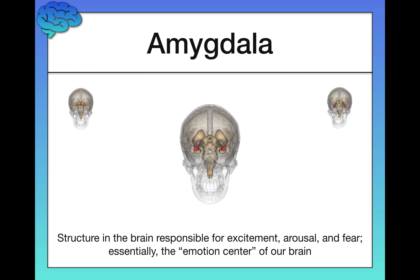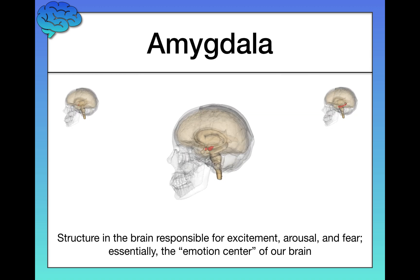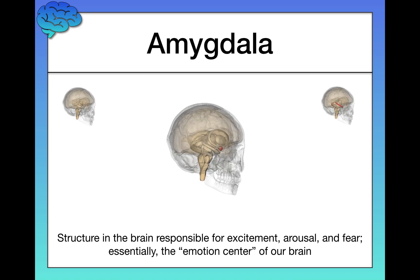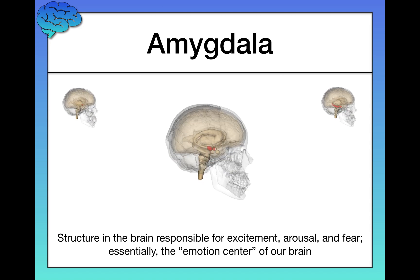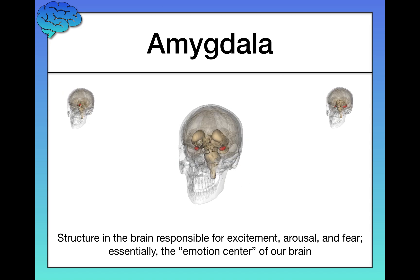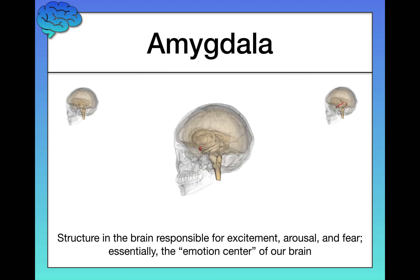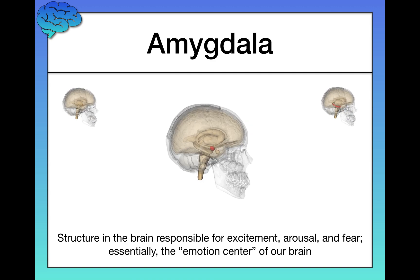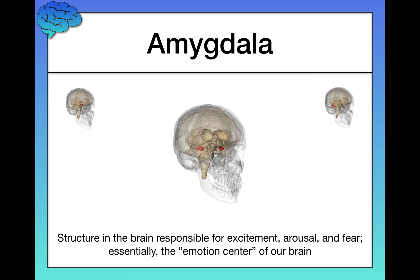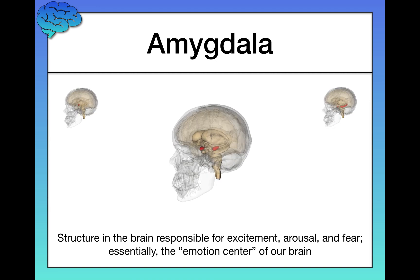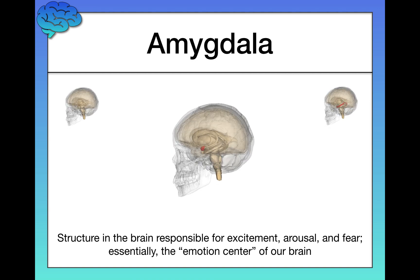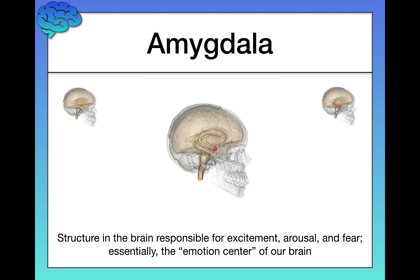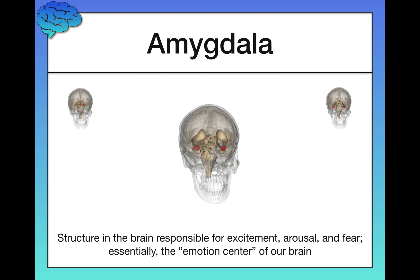Next we have the amygdala, sometimes called the emotion center or fear center of the brain. The amygdala is responsible for excitement, arousal, and fear. For example, if we put someone in a brain scanner and have them play violent video games or watch a horror movie clip, the amygdala lights up.